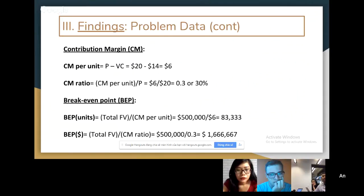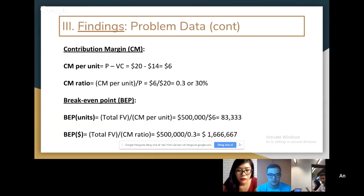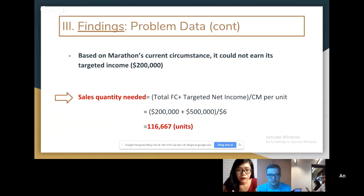For the break-even point: break-even point in units was total fixed cost divided by the contribution margin per unit, which is $500,000 divided by $6, equaling 83,333 units to reach break-even. Break-even point in dollars was total fixed cost divided by the contribution margin ratio, which is $500,000 divided by 30%, equaling $1,666,667. This is the point of no profit and no loss.